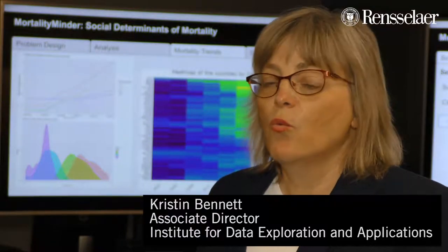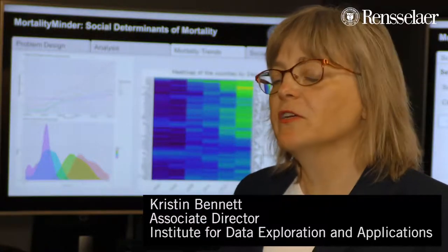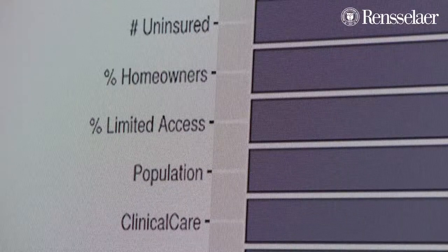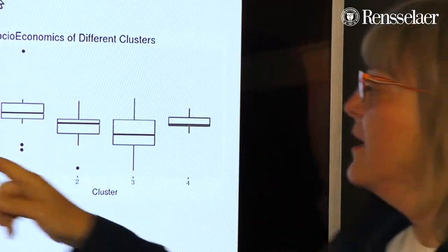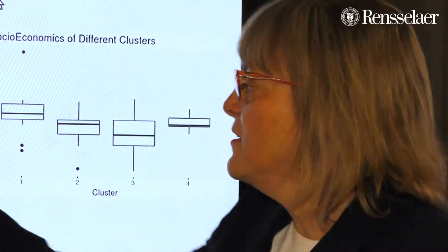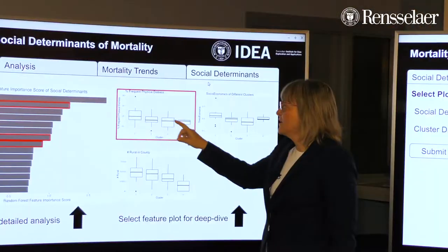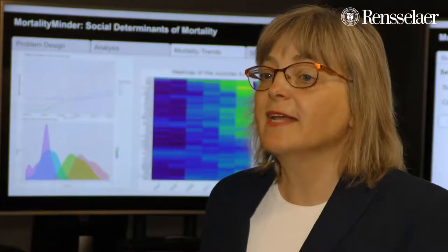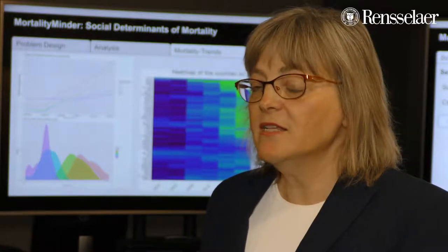The way it works is you can pick out what kinds of causes of mortality you're interested in, what geography you're interested in, what data you want to use, what social determinants you want to use, and then we use machine learning methods to discover subpopulations or groups of counties that have different rates.